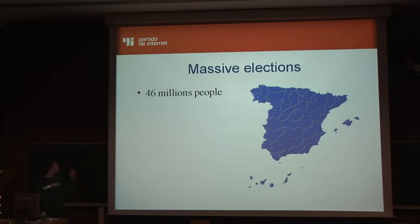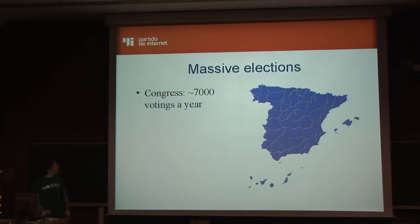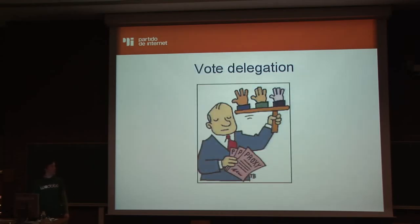Another requirement is to support massive elections. There are 46 million people in Spain, and massive elections mean two things: not just many people, but a lot of votes — 7,000 a year in the Congress. The voting system needs to support this. The third requirement is vote delegation.